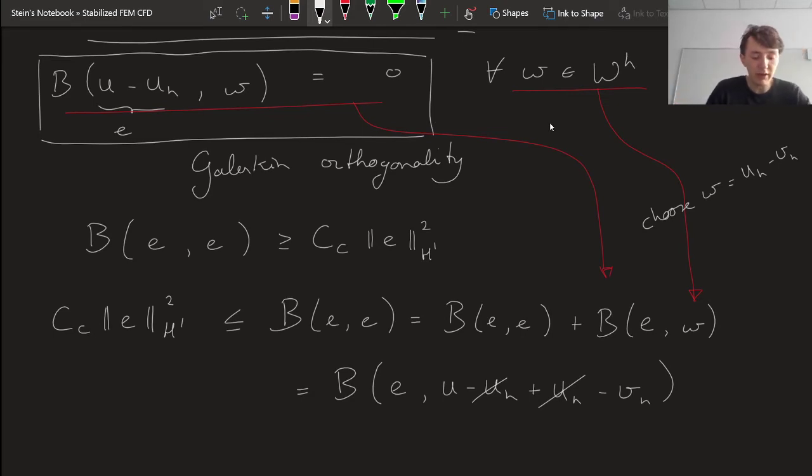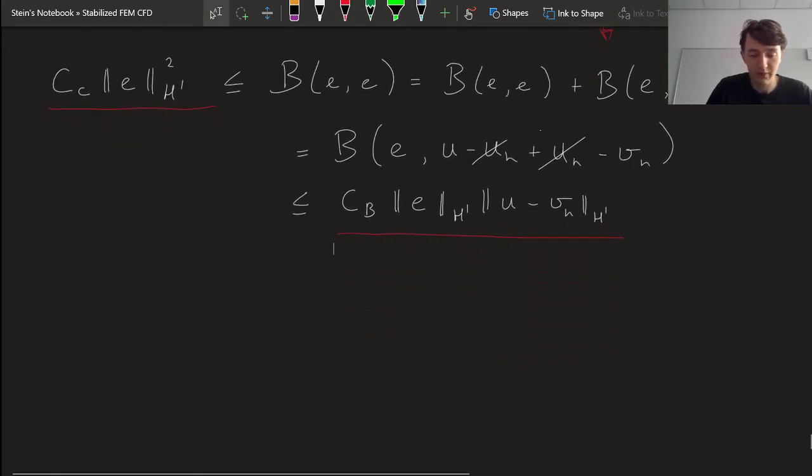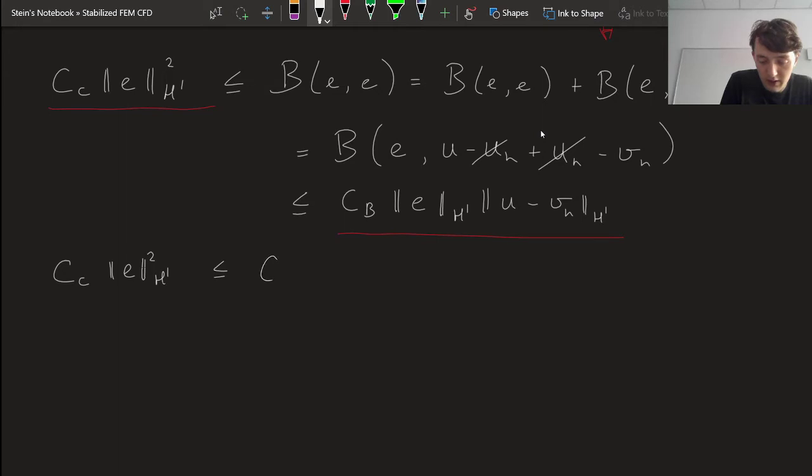And now I'll use the second property of our bilinear form, this boundedness property. So this is going to be smaller than or equal to our boundedness coefficient times the norm of the error, measured in H^1, not square, sorry, but rather multiplied by the norm of what was in the right slot here, that's u - v_h. The norm of that function, also in H^1. So again, we have this string here of inequalities, but they're all pointing in the same direction. So I end up with c_c times the norm of the error. It's going to be smaller than c_b times the norm of the error times the norm of that function.